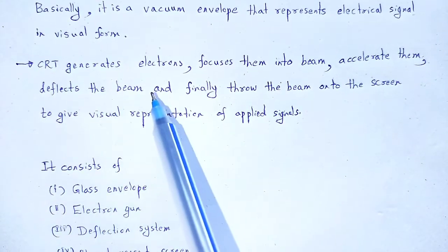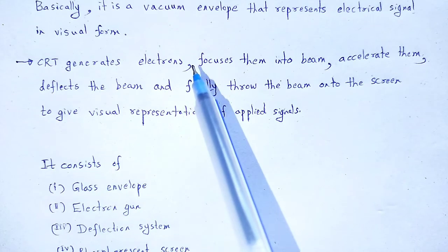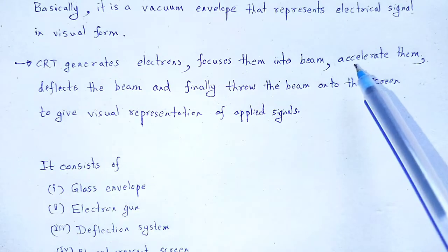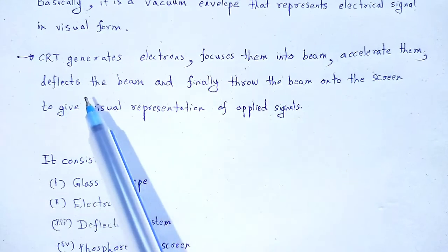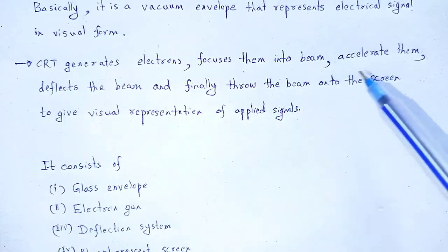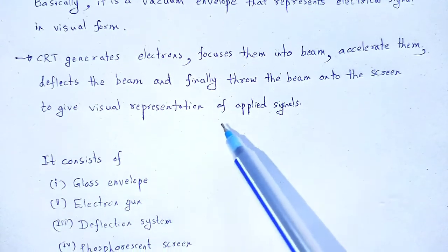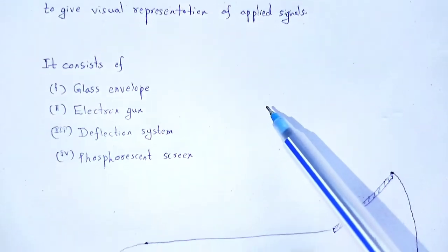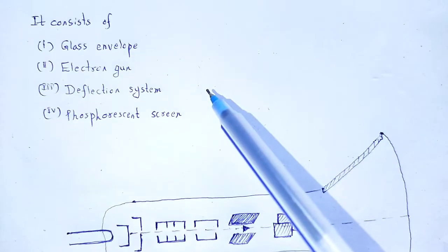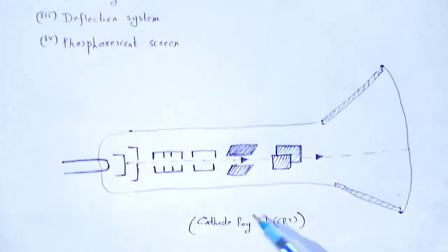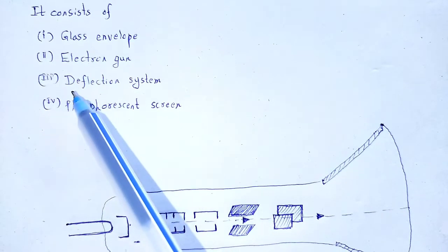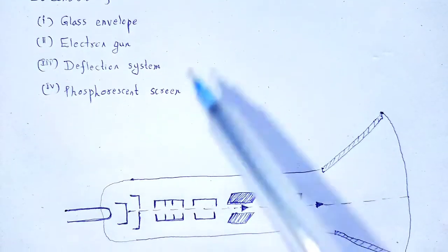CRT generates electrons, focuses them into a beam, accelerates them, deflects the beam, and finally throws that beam onto the screen to give a visual representation of the applied signals. The major parts of the cathode ray tube are: glass envelope, electron gun, deflection system, and phosphorescent screen.